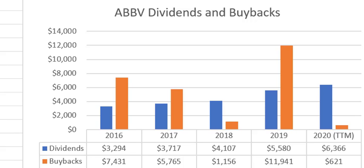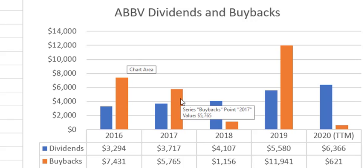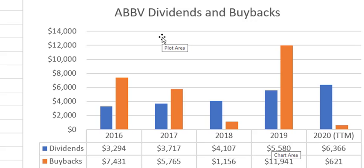Looking at AbbVie's dividends and share buybacks over the past five years — all numbers in millions — they have had an impressive streak of dividend growth, going from about $3.2 billion in dividends to about $6.3 billion five years later. A lot of money is also being pumped back in through share repurchases. The share buybacks are not very consistent, which could indicate they buy back shares whenever they have extra money available, or opportunistically when they believe shares are a good deal.